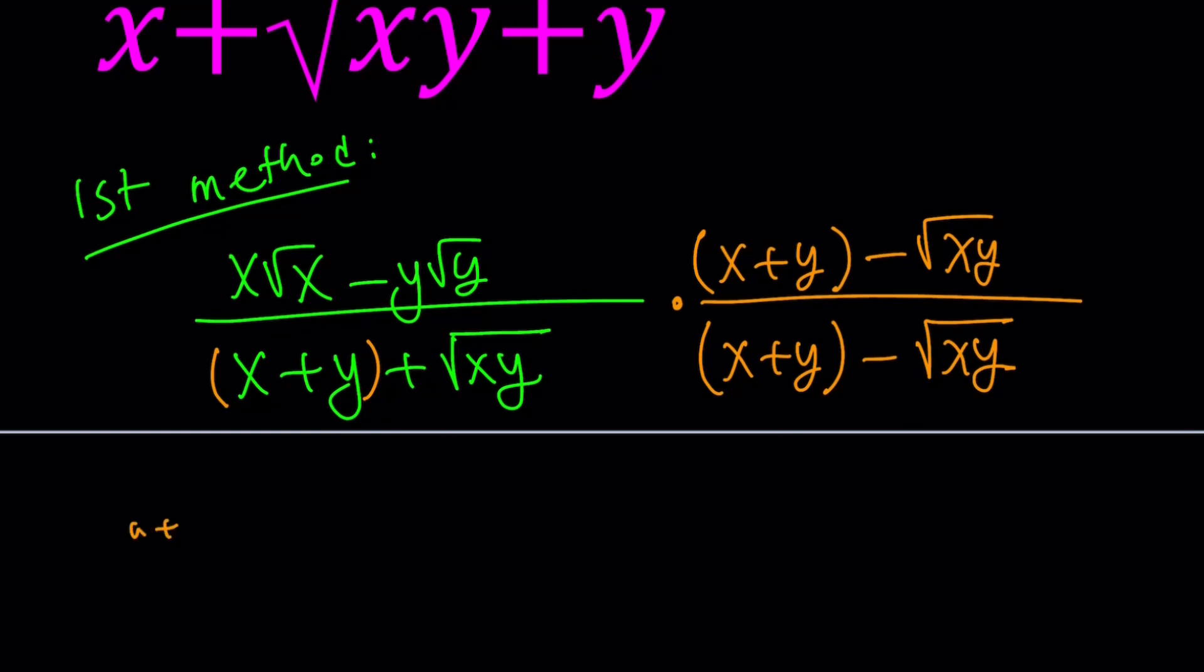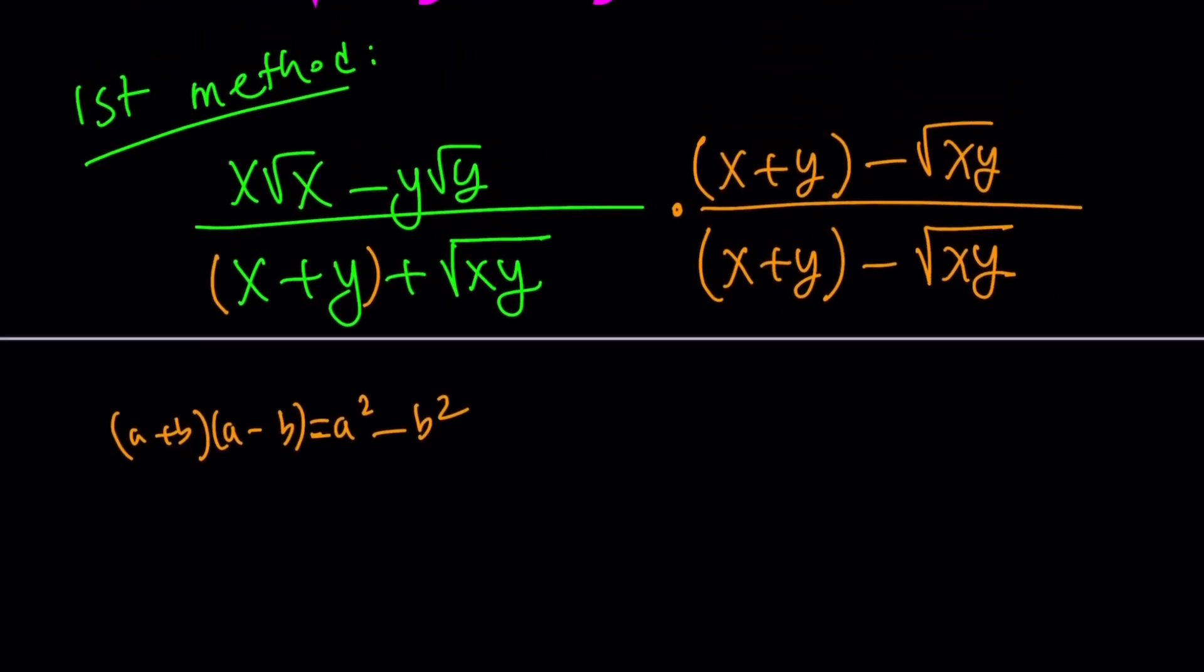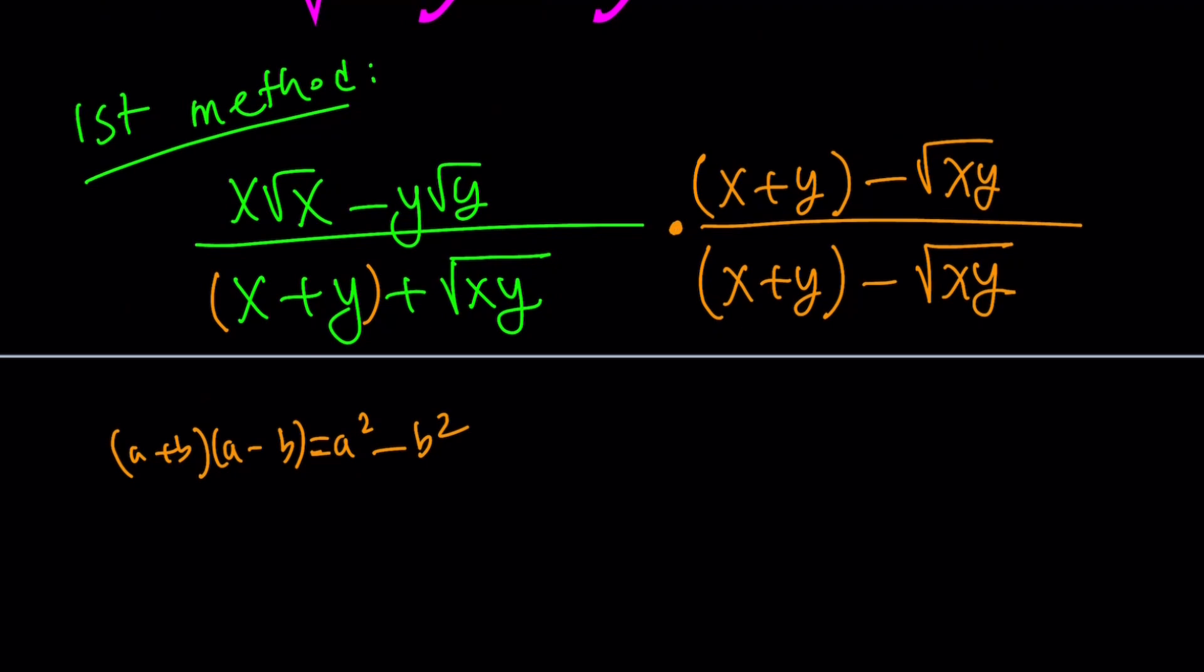Notice that the two factors at the bottom are conjugates, and their product produces a difference of two squares. When you multiply a plus b and a minus b, you get a squared minus b squared. That's one of the most important formulas in algebra and math in general. The bottom is going to be a difference of two squares. The top is just distributive property, kind of messy.